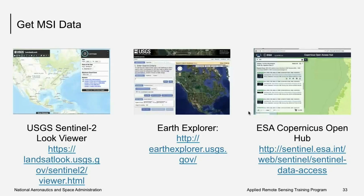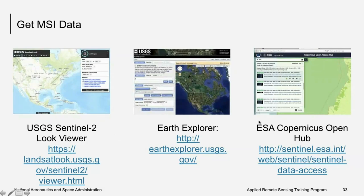To access MSI data, the same USGS tools — Earth Explorer and GloVis — are useful, along with a Sentinel-2 Look viewer. The European Space Agency's Copernicus Open Hub also provides Sentinel data and requires user registration. Once registration is approved, you can download the data.